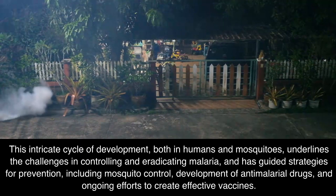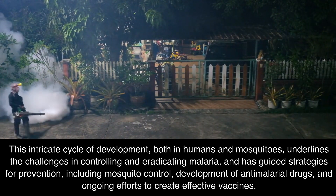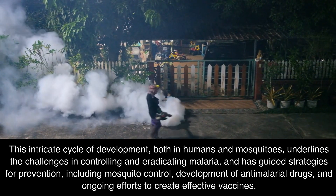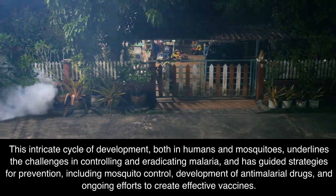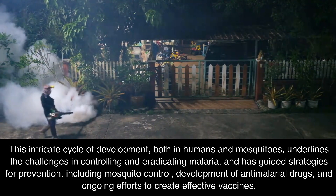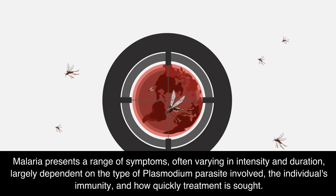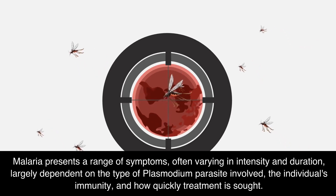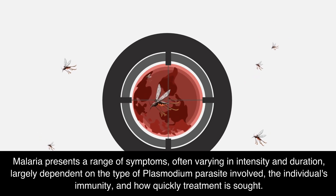This intricate cycle of development, both in humans and mosquitoes, underlines the challenges in controlling and eradicating malaria, and has guided strategies for prevention, including mosquito control, development of antimalarial drugs, and ongoing efforts to create effective vaccines. Malaria presents a range of symptoms, often varying in intensity and duration, largely dependent on the type of Plasmodium parasite involved, the individual's immunity, and how quickly treatment is sought.